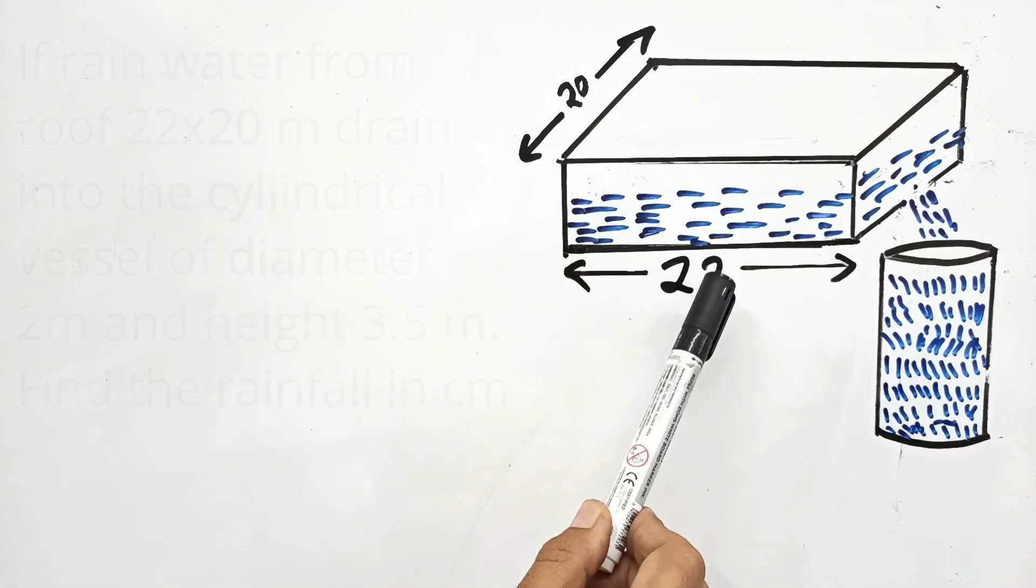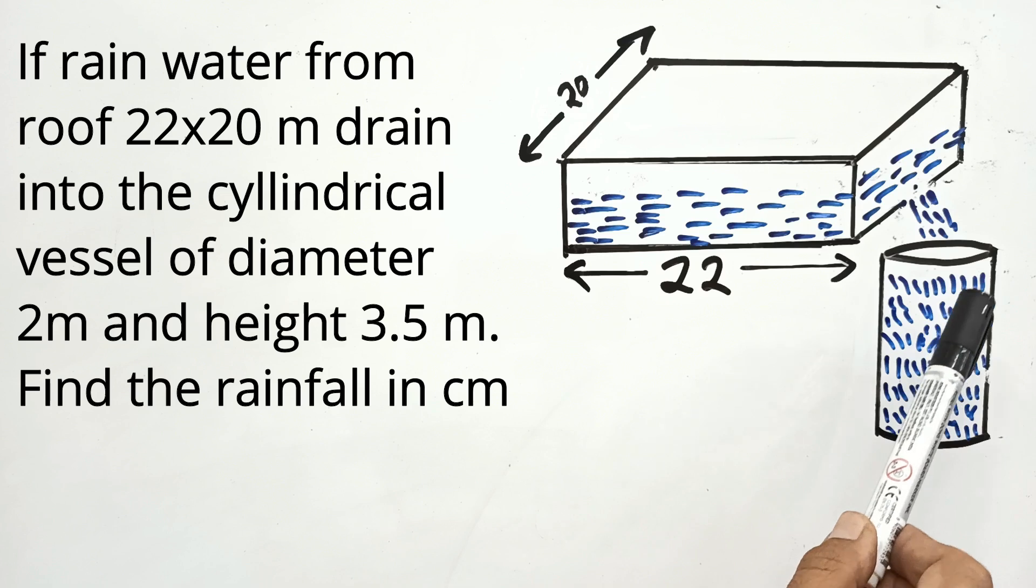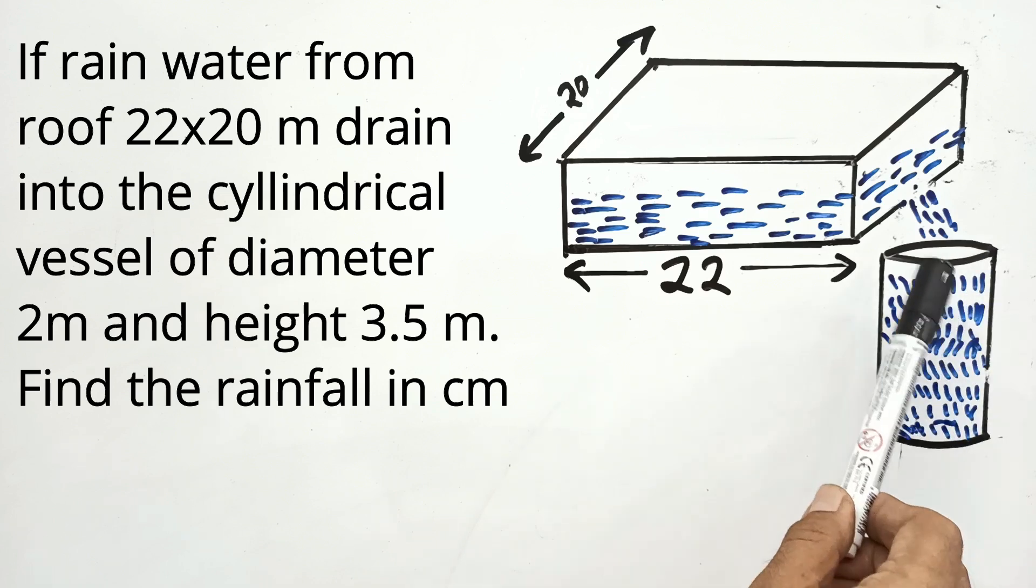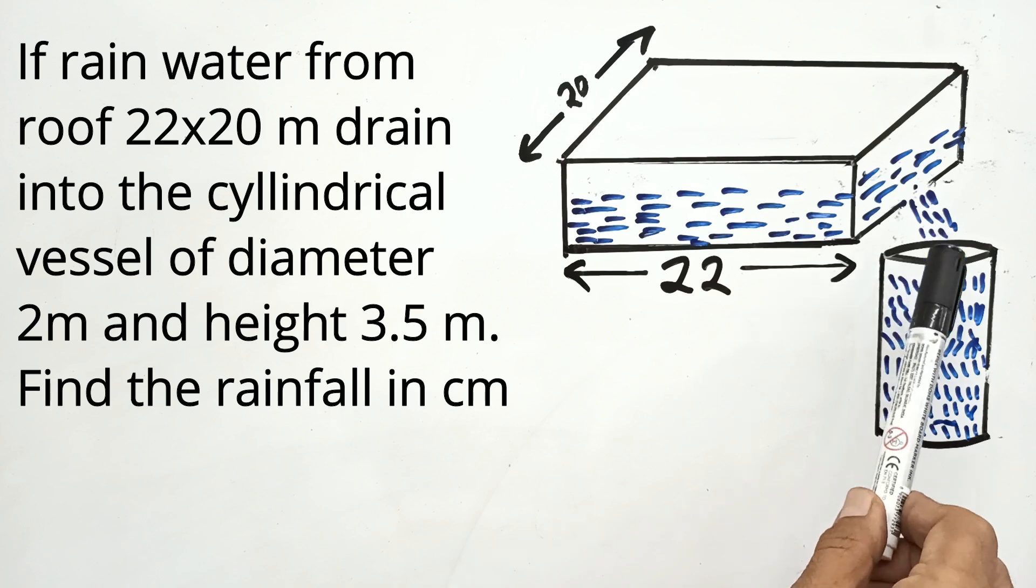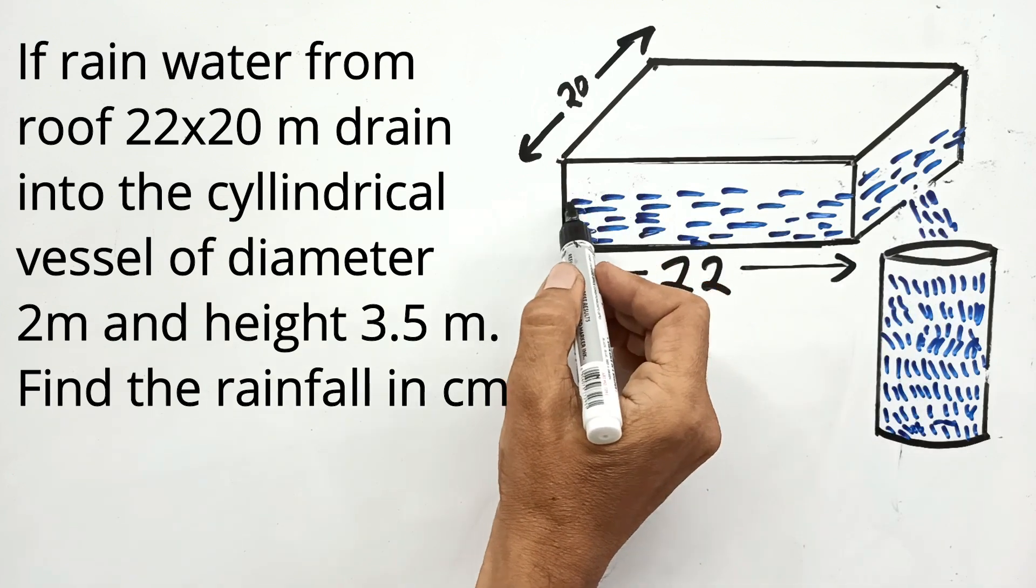Rain water from roof of dimension 22 by 20 meter drains into a cylindrical vessel of diameter 2 meter and height 3.5 meter. If rain water just fills the cylindrical vessel, find the rainfall in centimeter.